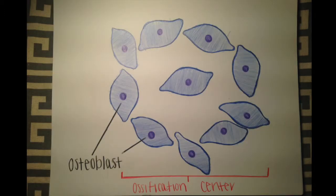At this point, the mesenchymal cells differentiate into osteoblasts, the cells that build new bone. This is considered the ossification center.